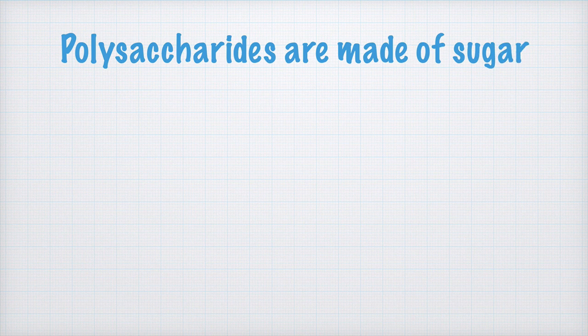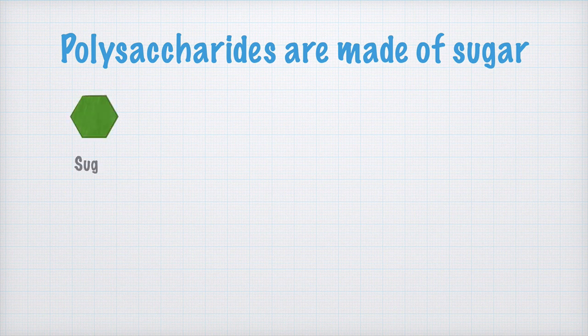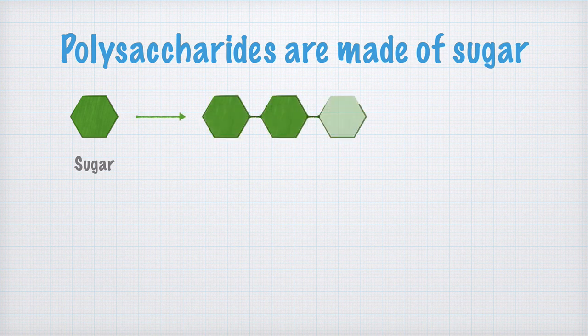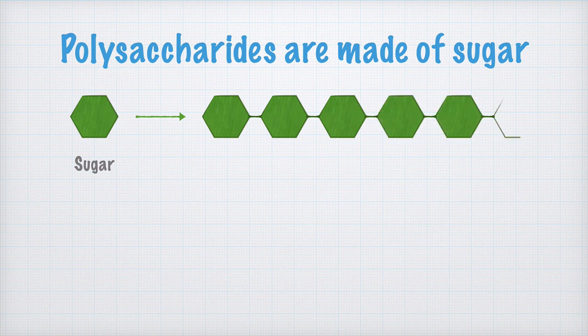First of all, polysaccharides are made of sugar. Now, I'm going to assume that you haven't studied any chemistry at all yet. Because of this, I only draw a sugar molecule like a hexagon, like this. This, by the way, is actually quite often the way sugar molecules are drawn. The word polysaccharide literally means many sugars. A polysaccharide is thus made from several sugar molecules somewhat like this.